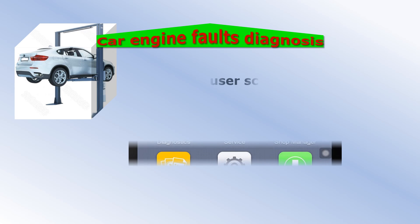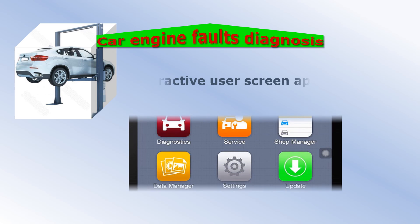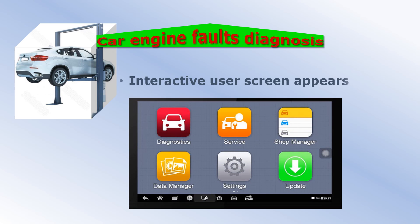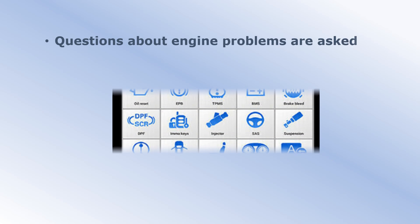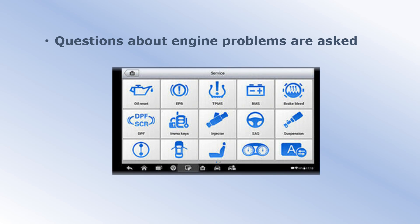First, an interactive user screen appears. Then details of the car type are entered. Next, questions about engine problems are asked. Then the onboard computer is connected to the expert system.